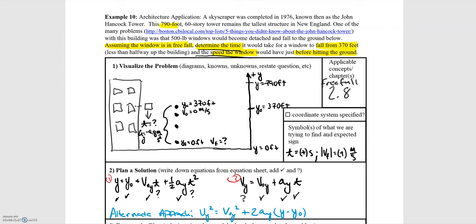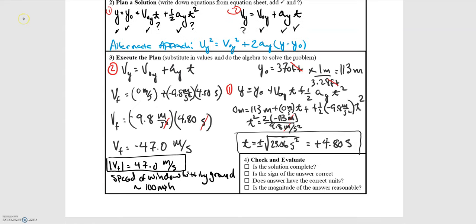There is also an alternate approach where you start by solving for the final velocity and then solve for time using the second equation. Both approaches are equally valid — it just depends on which quantity you want to solve for first.